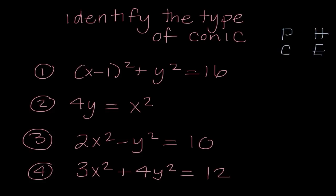If both variables are squared, on the same side of the equation, with addition, and they have the same coefficient — like x squared plus y squared — then it's a circle. An ellipse would be both squared, addition, same side of the equation, but with different coefficients, like x squared plus 5y squared.